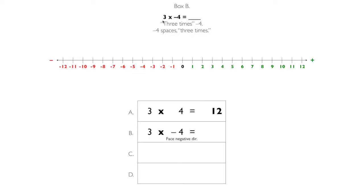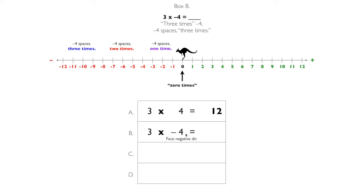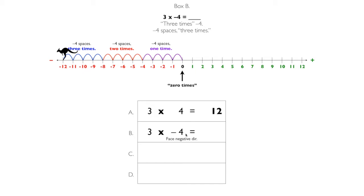Box B: three times negative four, pronounced 'three times negative four.' So go negative four spaces three times. We'll start at zero, and notice that we're facing the negative direction because we have negative four. Let's jump negative four spaces one time, negative four spaces two times, negative four spaces three times. Three times negative four equals negative twelve. Write it down.